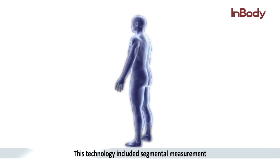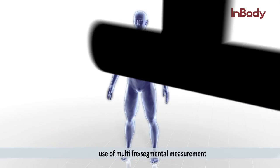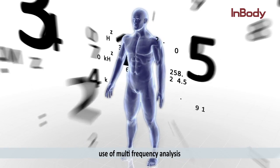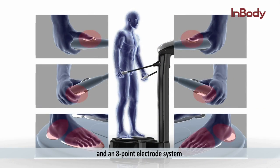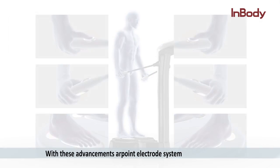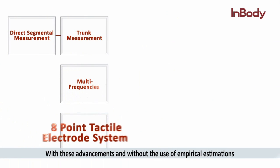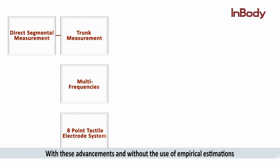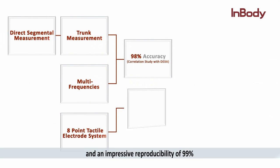This technology included segmental measurement, use of multi-frequency analysis, and an eight-point electrode system. With these advancements and without the use of empirical estimations, the InBody achieved 98 percent correlation with DEXA and an impressive reproducibility of 99 percent.